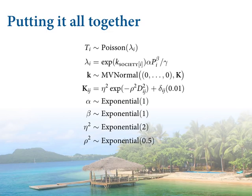Here's the model. Starting from the top: the Poisson likelihood, then lambda with the k's inside as a multiplicative factor, then the vector of k's as a multivariate normal. The action is in defining the covariance matrix capital K. Down at the bottom we have priors for eta-squared and rho-squared. They're squared by convention — I think in some original paper they were squared to be positive. You can just define eta-squared and rho-squared on the squared scale, and that's perfectly fine.